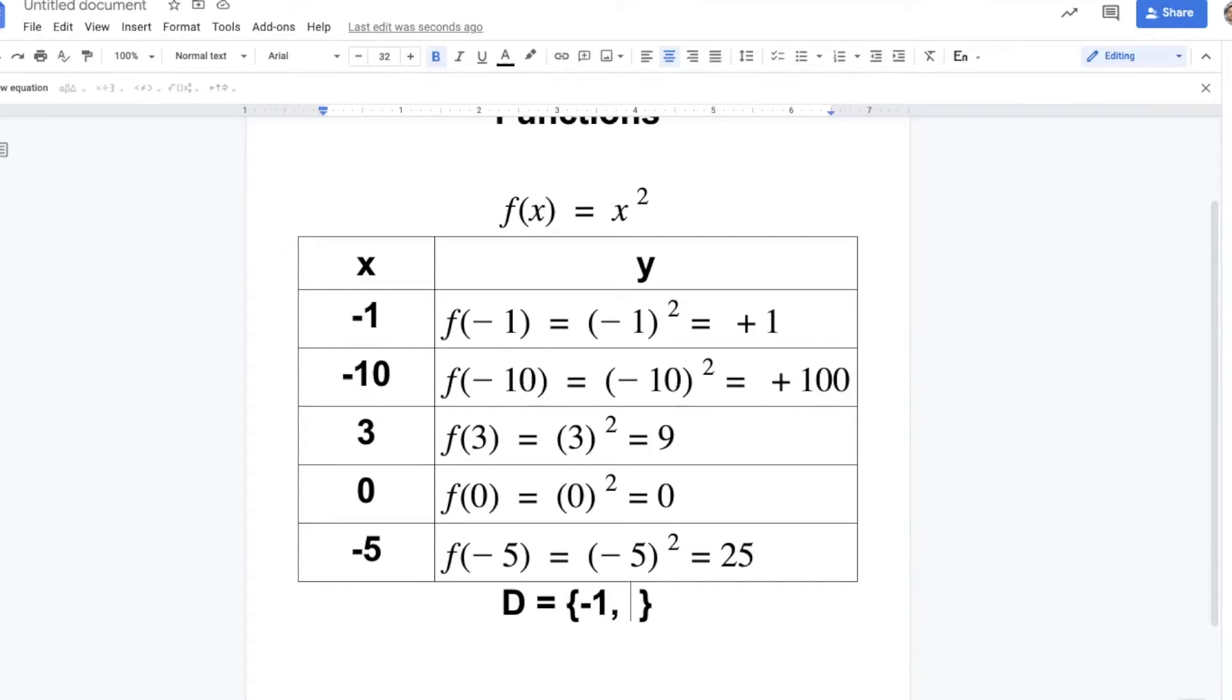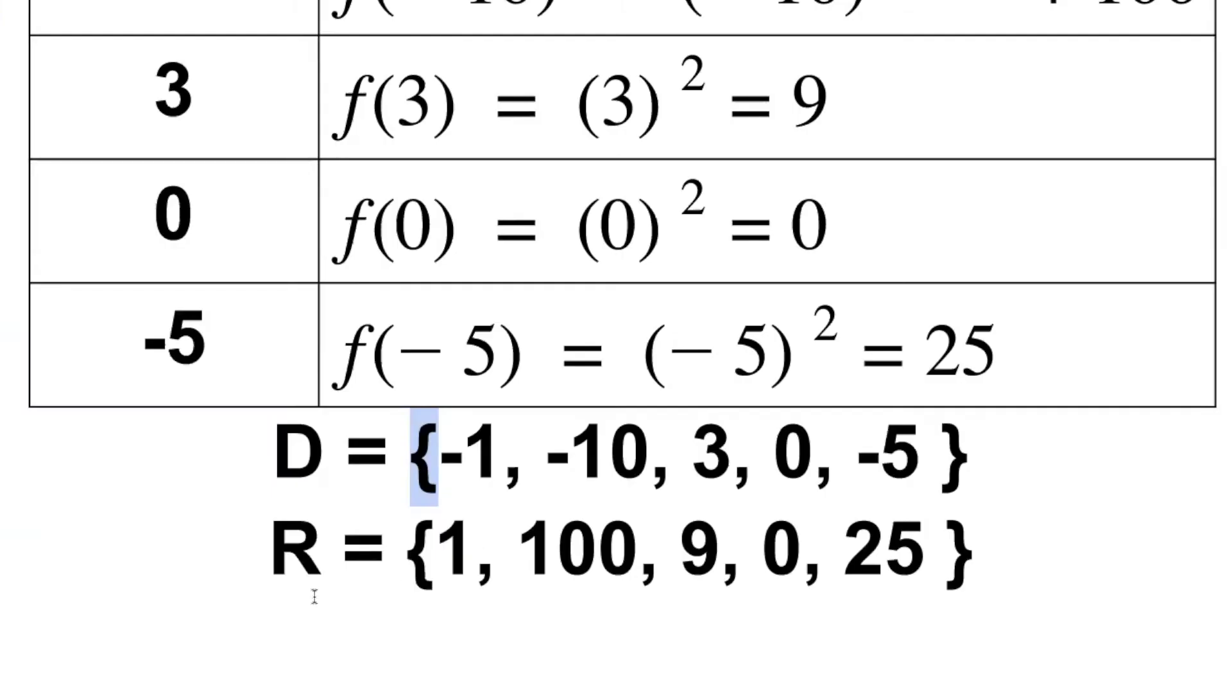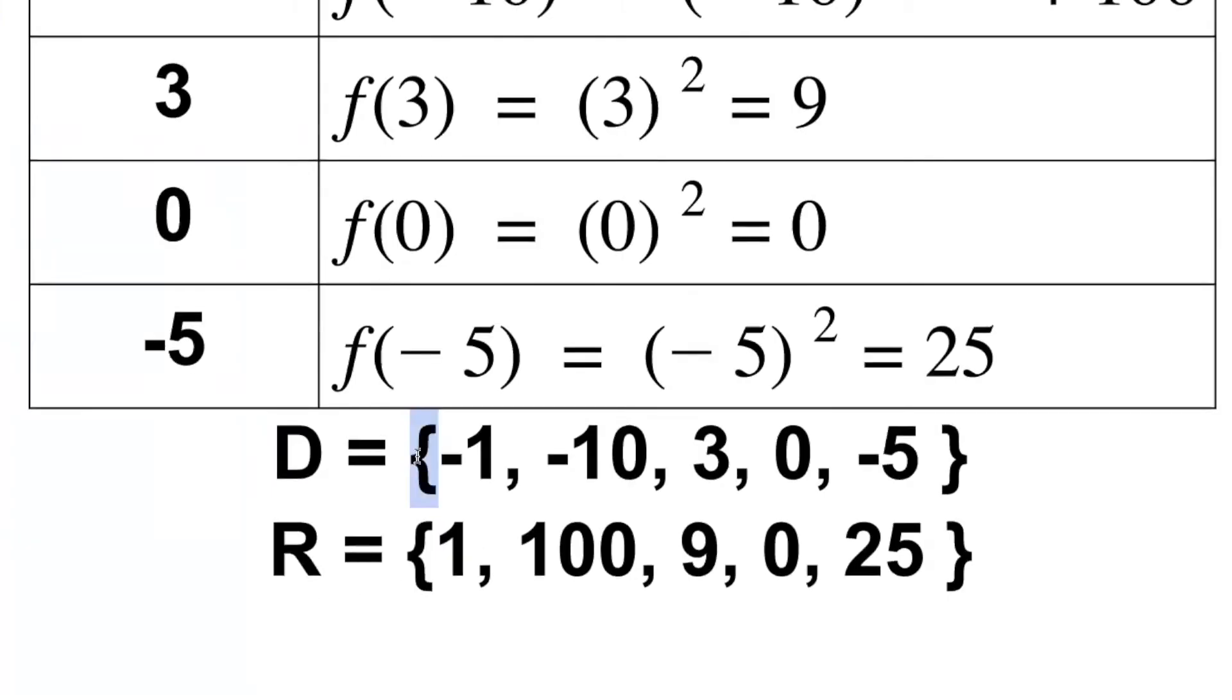What is the domain? Give me x values. What is x? Negative 1, negative 10, 3, 0, negative 5. We call this brace. I have parenthesis, bracket, and brace. I have to put the domain in braces because it tells me this is a set, a group of things with commas between them.